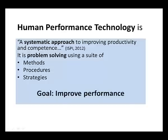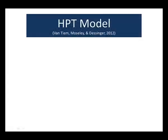One of the models that you will use in your studies and in your work as a performance technologist is the human performance technology model. There are four general phases within this model, and we'll describe each of these phases briefly, with an acknowledgement that this model is much more in-depth than our overview here. The first phase or step in the model is analysis.